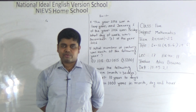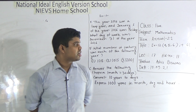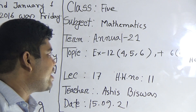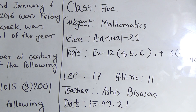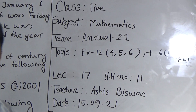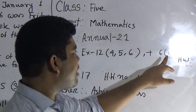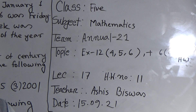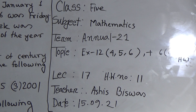Today I am going to take a math class for the students of Class 5. Today is our lecture number 17 of annual time, and today's homework number will be 11. Our today's topic is Chapter 12 — the name of the chapter is 'Time'. From Exercise 12, we shall solve question numbers 4, 5, and 6 as your classwork. Question number 6, sub-number 12, will be your seatwork. You must do your assigned seatwork in your seatwork copy and submit it regularly in our school library every Saturday between 9 AM and 3 PM.